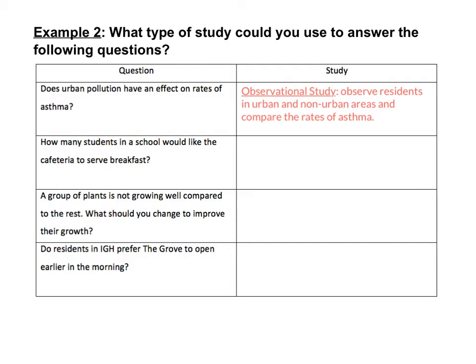The second question: how many students in a school would like the cafeteria to serve breakfast? This could easily be answered by using a sample survey. You can randomly choose a group of students and ask them a question like, would you prefer the school cafeteria serves breakfast? Then record their answer yes or no, and analyze the results.